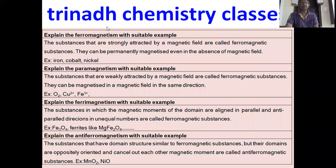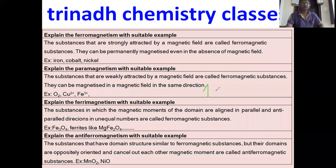Questions from solid state: explain ferromagnetism, ferrimagnetism, and anti-ferromagnetism with suitable examples. Ferromagnetic substances are strongly attracted by a magnetic field and can be permanently magnetized even in the absence of a magnetic field. Ferrimagnetic substances are weakly attracted by a magnetic field and can be magnetized in the direction of the field. Ferrimagnetic materials have magnetic moments of domains aligned in parallel and anti-parallel directions in unequal numbers. If the numbers are equal, those substances are called anti-ferromagnetic materials.